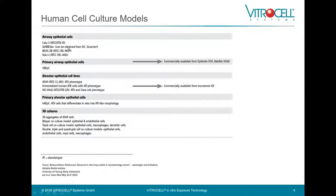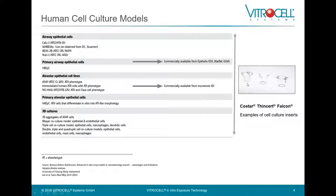Basically, you have these classes of human cell culture models: it starts with airway epithelial cells, goes to primary airway epithelial cells, you have cells from the alveolar region, primary alveolar epithelial cells, and it goes to 3D culture. A lot of these cells can already be purchased in a ready-to-use format, coming already ready-to-use on cell culture inserts.